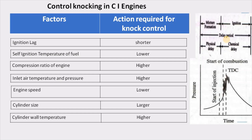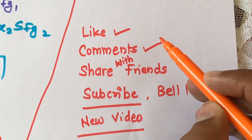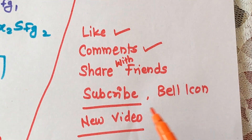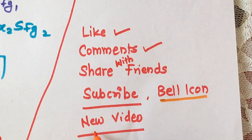Higher cylinder wall temperature means the mixture is retained at higher temperature, combustion chamber activity becomes faster, the delay period decreases, and probability of knocking decreases. In summary, to control knocking in CI engines: use larger cylinder size, run at lower speed, use turbocharging or supercharging for higher temperature and pressure charge, maintain higher compression ratio, and use fuel with a lower self-ignition temperature and shorter ignition delay period. Thank you — please like the video, share your thoughts in the comments, share with friends, and subscribe to the channel.